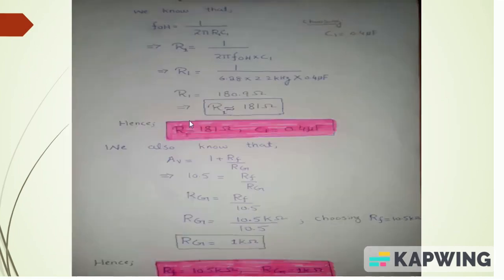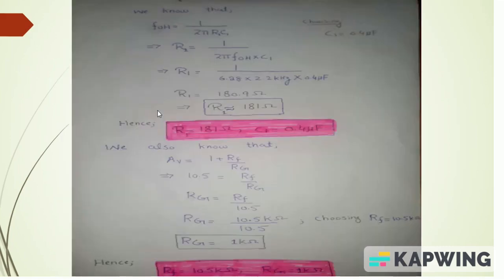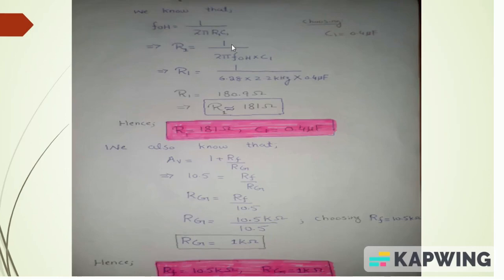For designing the low-pass filter, the cutoff frequency formula is fc = 1 / (2π × R1 × C1). Rearranging, R1 = 1 / (2π × fc × C1). Since the cutoff frequency is given, once we choose a capacitor value from the given conditions we can easily calculate R1.